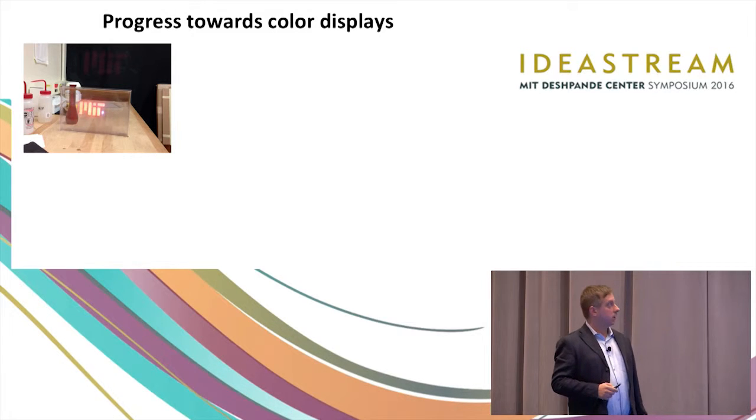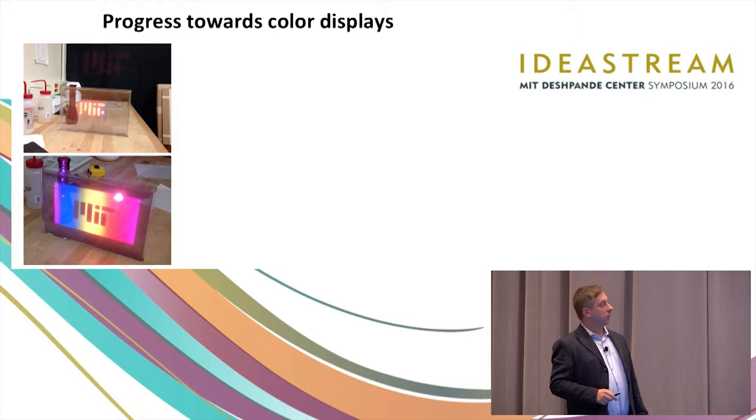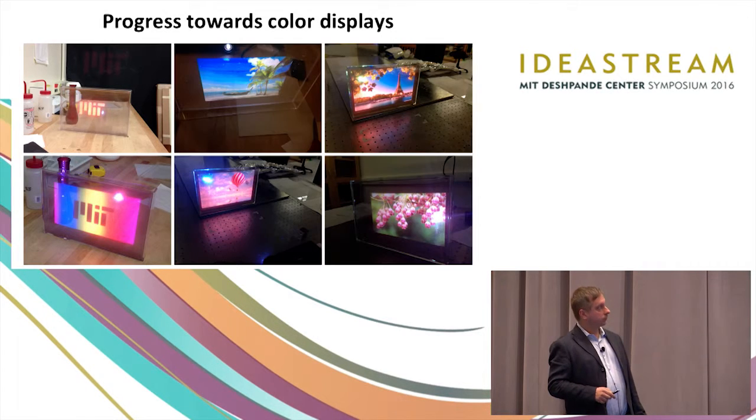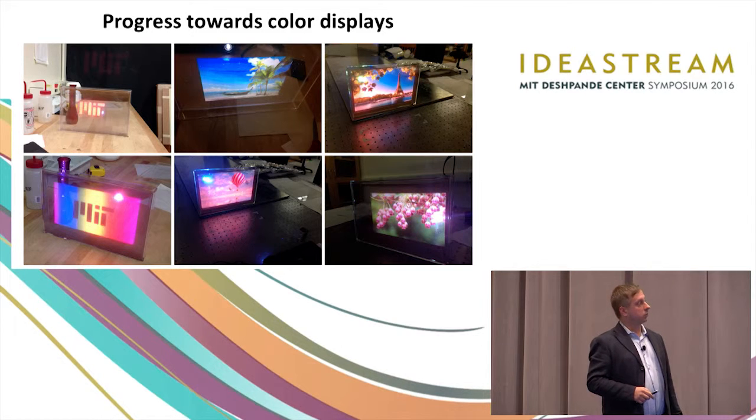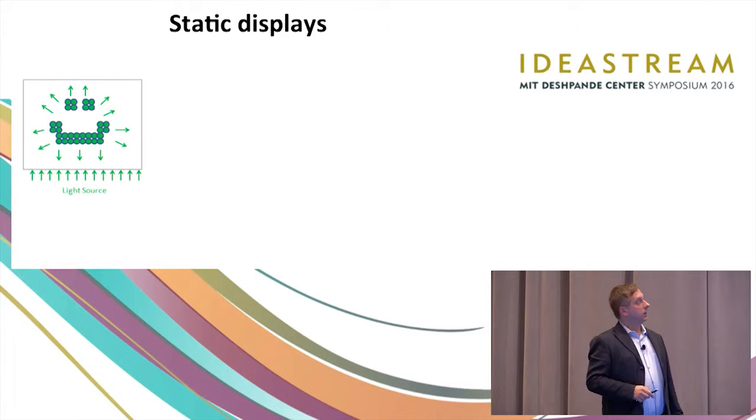And here is some progress that we made. So first of all, as you can see, we did a red color. Then we are making progress on multiple colors. Or for example, as shown here, we are still working to improve colors. And then we also started developing new concepts.